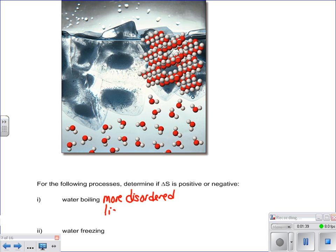In other words, you have a liquid that's going to a gas. So therefore, more disordered, our delta S is going to be a positive value.